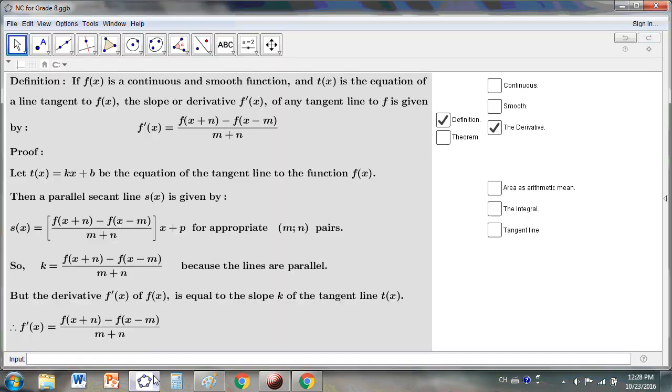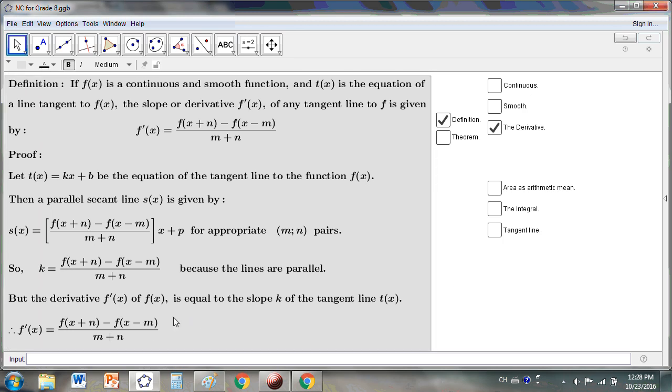Now in a previous video I proved this and I've shown you how you can prove this new derivative definition. So I show you the definition which says that if f is continuous and smooth and t(x) is the equation of a tangent line to f(x), the slope or derivative is given by that and the proof is simple. We just let t(x) be the tangent, then let a parallel secant line be given by that equation, and it follows that k must equal to that. But the derivative is equal to the slope k of the tangent line because that's its definition, therefore we have the definition in place and so we know that that definition is correct.